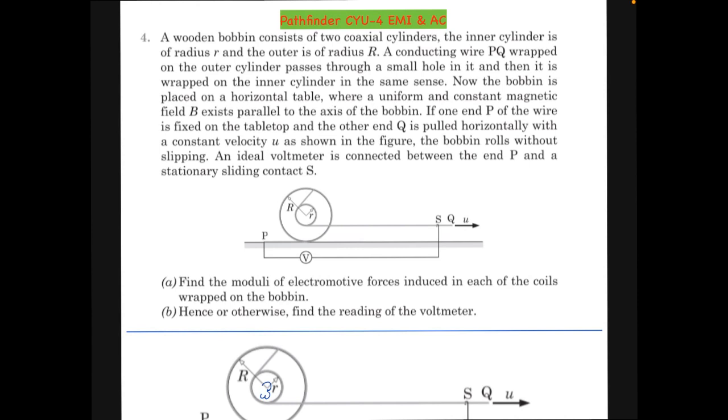Hello guys, here we have question number four from Check Your Understanding of EMI and AC chapter from the Pathfinder. This was requested by someone, so let's start. A wooden bobbin consists of two coaxial cylinders.